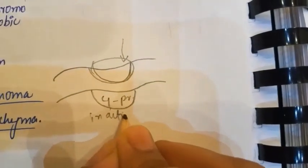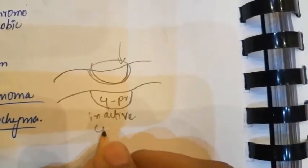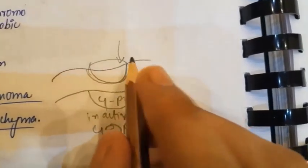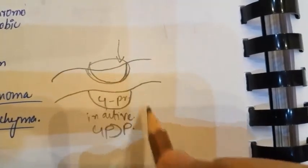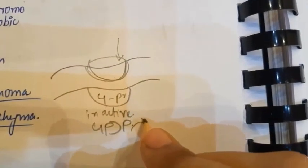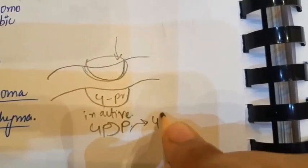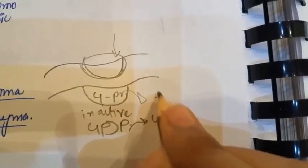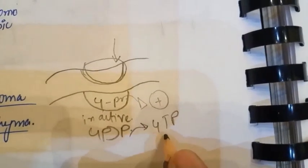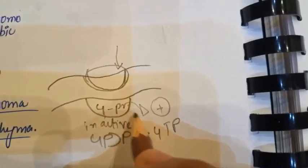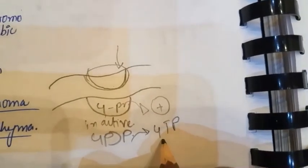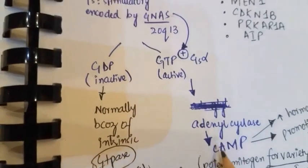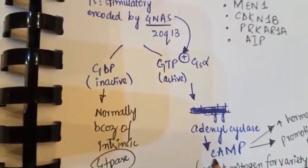When the ligand binds to the receptor, GDP is phosphorylated to GTP, which activates the G protein. This activated G protein — bound with GTP — will then stimulate adenyl cyclase, resulting in the formation of cyclic AMP.